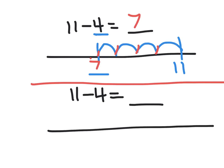I could also count up from the number 4. So if I did that I would start at the number 4 and count up to the number 11: 4, 5, 6, 7, 8, 9, 10, 11.